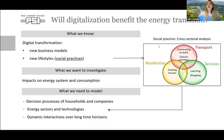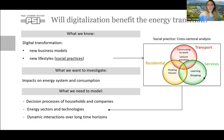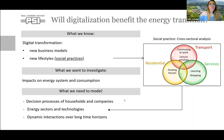Why do we discuss social practices? Social practices allow us to analyze the cross-sectoral implications between different lifestyles and activities. We can analyze implications for the residential sector, the transport sector, and the services sector, analyzing social practices like commuting to work, eating at home, learning, or shopping. In order to analyze digital transformation, we have to model decision processes of households and companies across several energy sectors and technologies with dynamic interaction over a long time horizon.